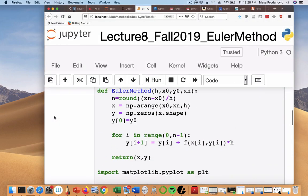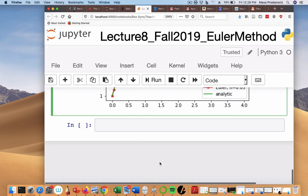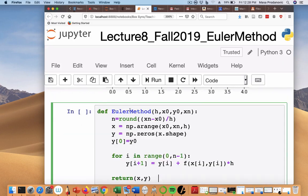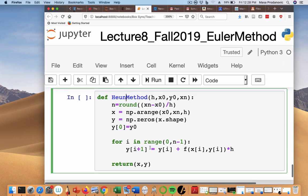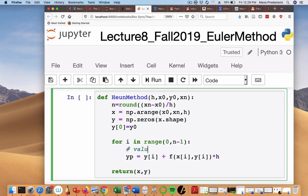So I take this y that I would normally take as a solution at this point. I could take it as a prediction. Let's see whether that's better. So I'm going to copy this method that I created as Euler. I'm going to go into a new cell, and I'm going to say Heun.